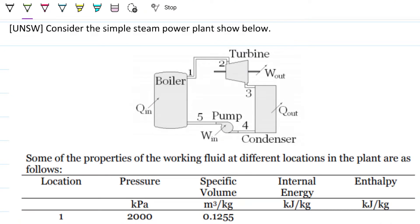Hello guys and welcome back to Engineering Hack, where we try to solve engineering problems in a way that's hopefully easy to understand. Today we're looking at another problem in the realm of thermodynamics — getting into more practical applications using the theory from previous videos. We need to find the energy input, work output, and mass flow rate for a steam power plant, applying the first law of thermodynamics.